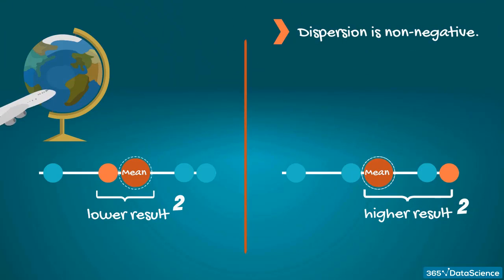Dispersion is about distance, and distance cannot be negative. If, on the other hand, we calculate the difference and do not elevate to the second degree, we would obtain both positive and negative values that, when summed, would cancel out, leaving us with no information about the dispersion.